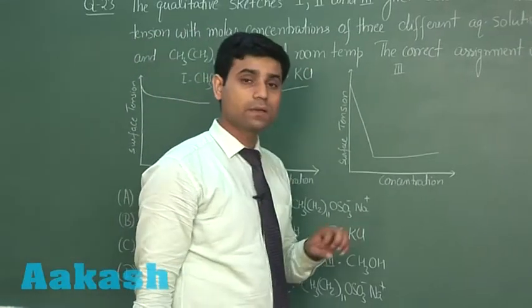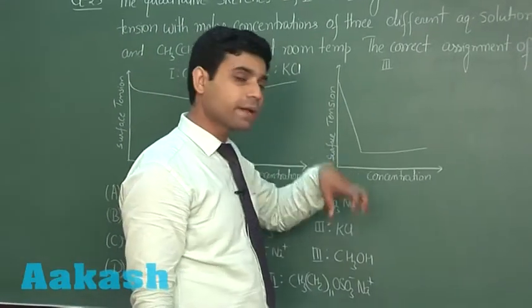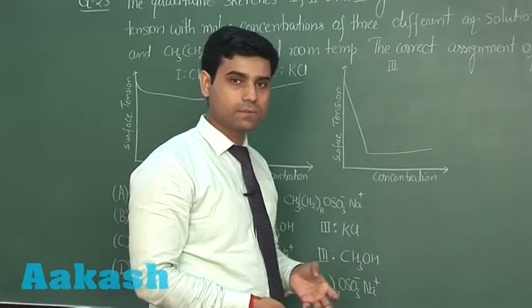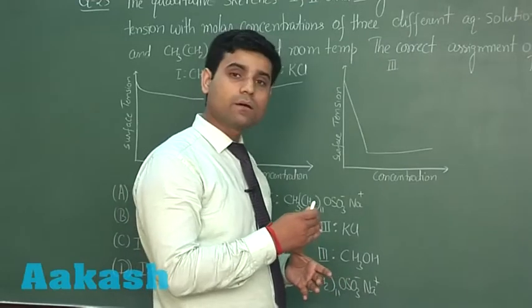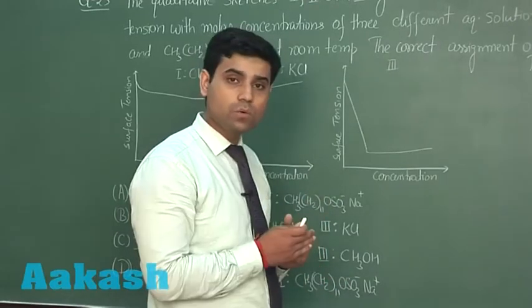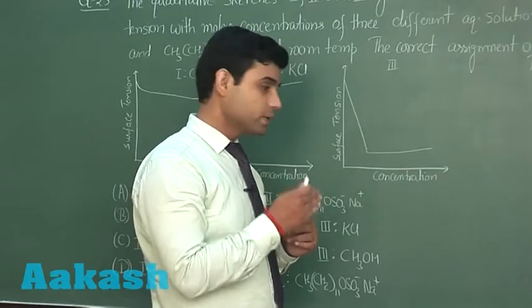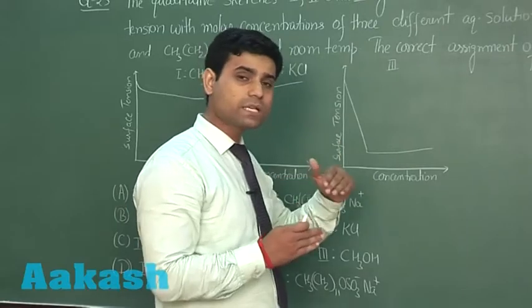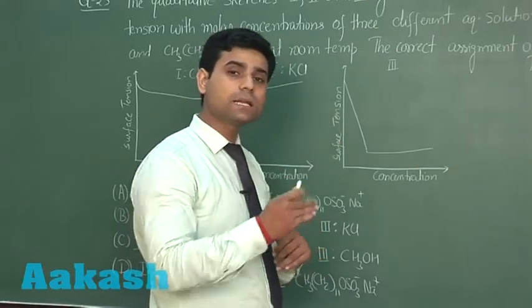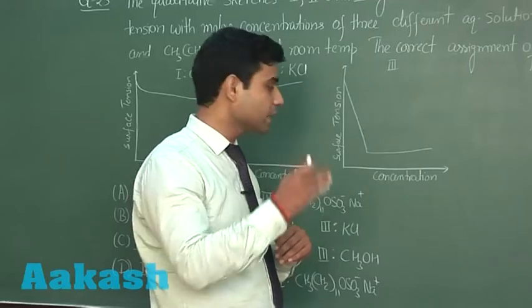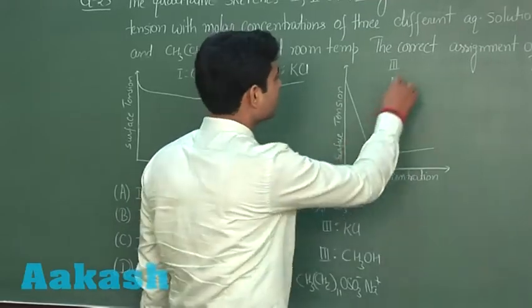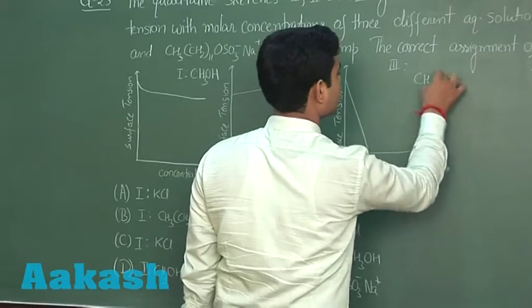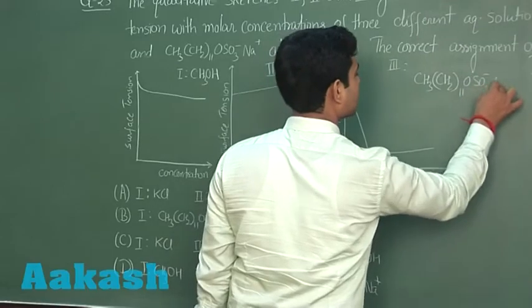In the third case, if we add surfactant to water, the surface tension decreases rapidly. When the concentration reaches a certain value, the surface tension will increase slightly. First it will decrease rapidly. After certain limit of concentration, it will increase. Therefore, this will be for surfactant, which is our CH3(CH2)11OSO3- Na+.